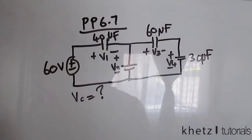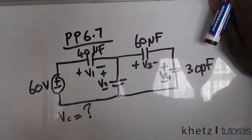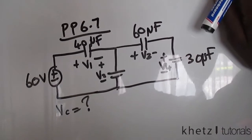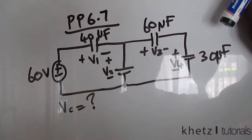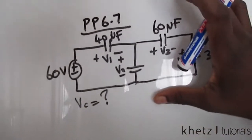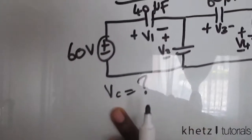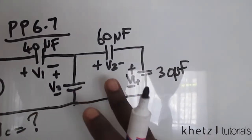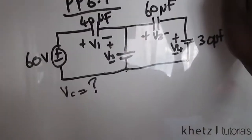Welcome to CAT Tutorials. In this video I'll be covering practice problem 6.7. This question is asking us to find the voltage across each capacitor, labeled V1, V2, V3, and V4.